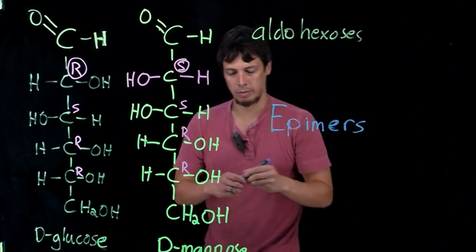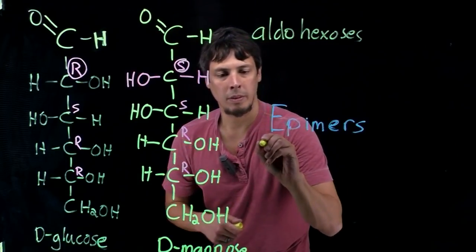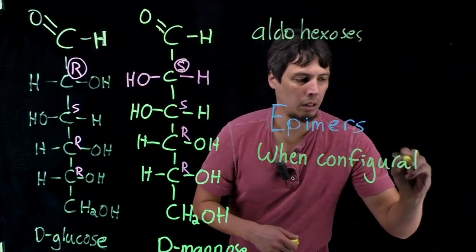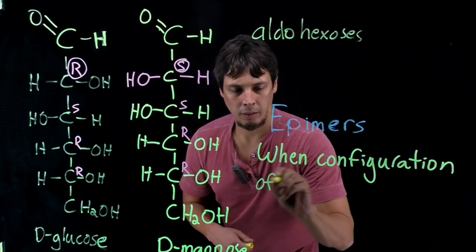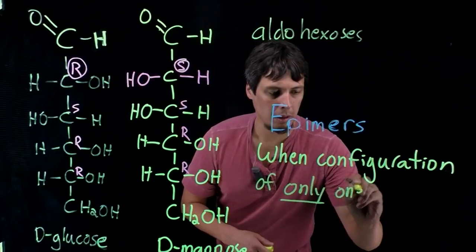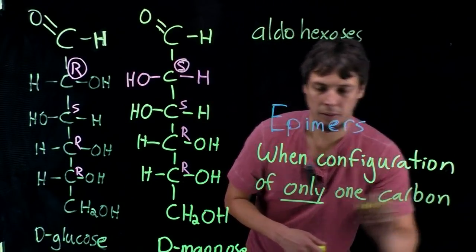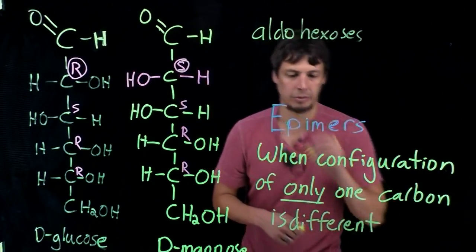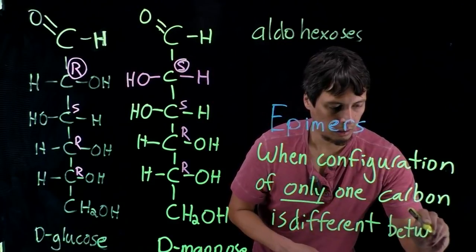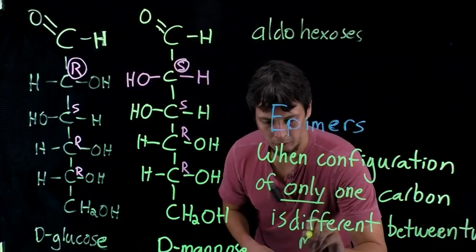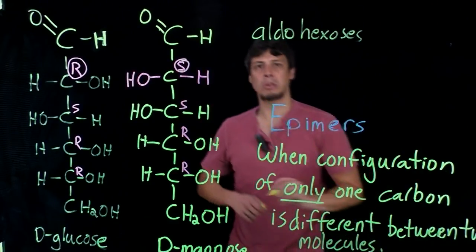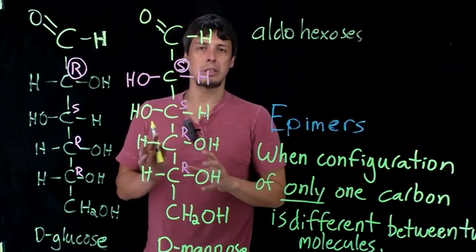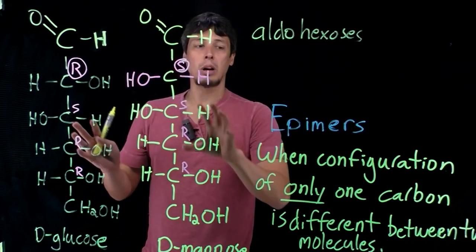So epimers are when configuration of only one carbon is different. So this is a special type of stereoisomer. And so this puts the hydroxyl group on a different side of the carbons. And so that changes the stereochemistry of specifically that carbon. And so we can relate these two molecules again as epimers here.